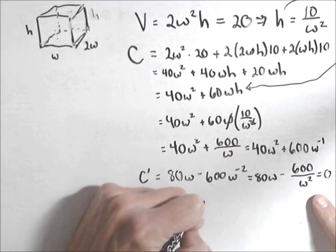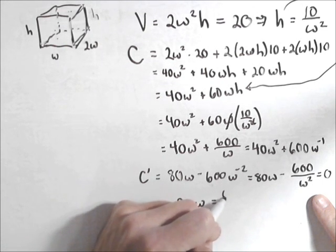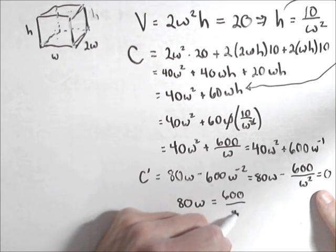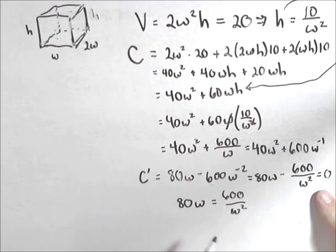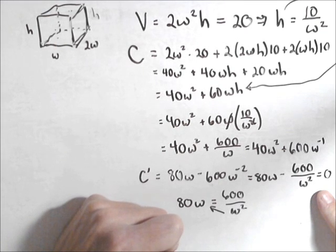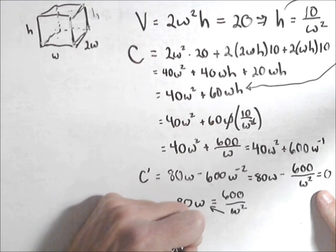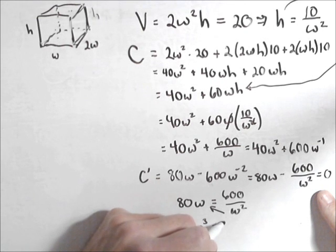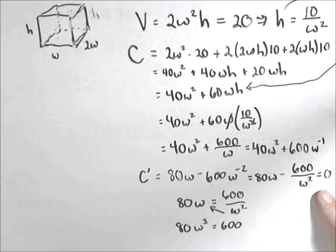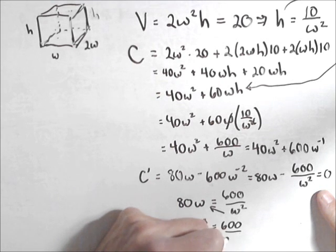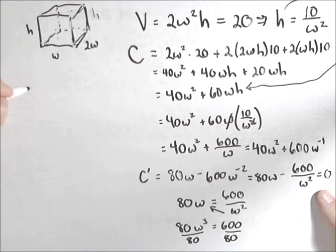So we get 80w equals, add the 600 over w squared to both sides. Okay, and now what I'm going to do is I'm going to cross multiply that w squared. So I have 80w cubed equals 600. Alright, and let's simplify this a little bit. Let's solve for w. Divide both sides by 80. We are going to get w cubed equals 7.5.